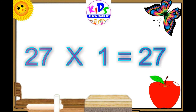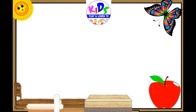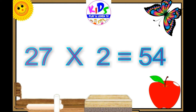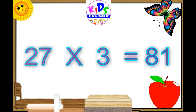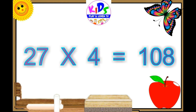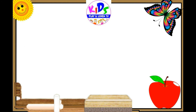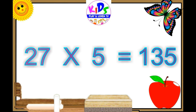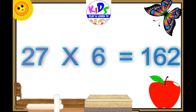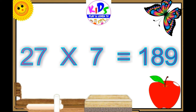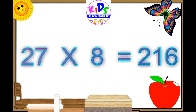27 ones are 27, 27 twos are 54, 27 threes are 81, 27 fours are 108, 27 fives are 135, 27 6s are 162, 27 7s are 189, 27 8s are 216.